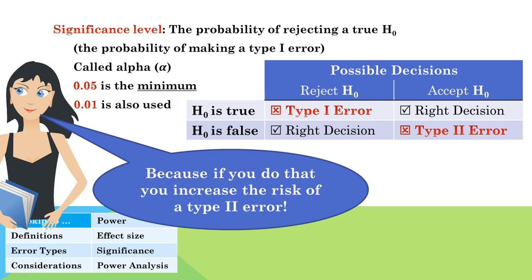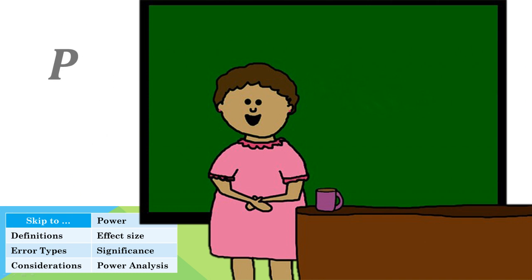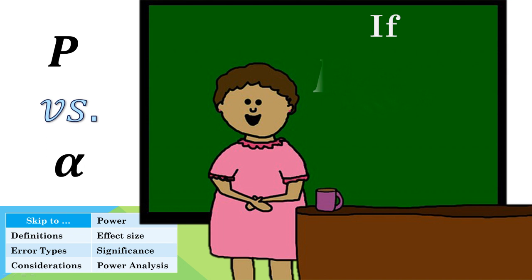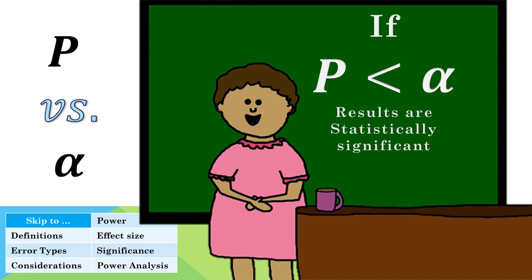Researchers need to accept a certain level of chance that they may be wrong. Before a study begins, a balancing act occurs where researchers decide what values are appropriate. Don't confuse alpha with p. Alpha levels are determined before the study begins, while p values are calculated from sample data after the study has been completed. If the p value is less than the alpha value, the null hypothesis is rejected and the results are statistically significant.